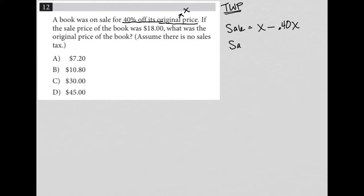I can also say, if I simplify that, that the sale price is equal to just 60% of the original, right? So 40% off means you're paying 60%. So that's what this line here would represent.